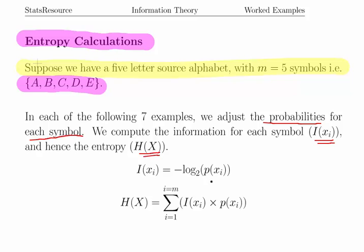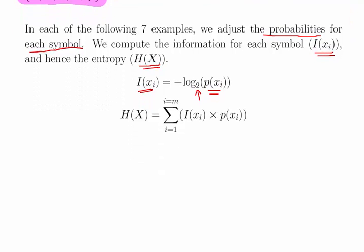Essentially what I'm going to do here is give you the probabilities for each symbol in each of the seven cases. We'll compute the information for that which is simply minus log to the base two of the probability. I'm going to stick with base two for this set of videos. What we'll do then is multiply those out to compute the entropy, which is the information times the probability for each symbol, and sum them all up.